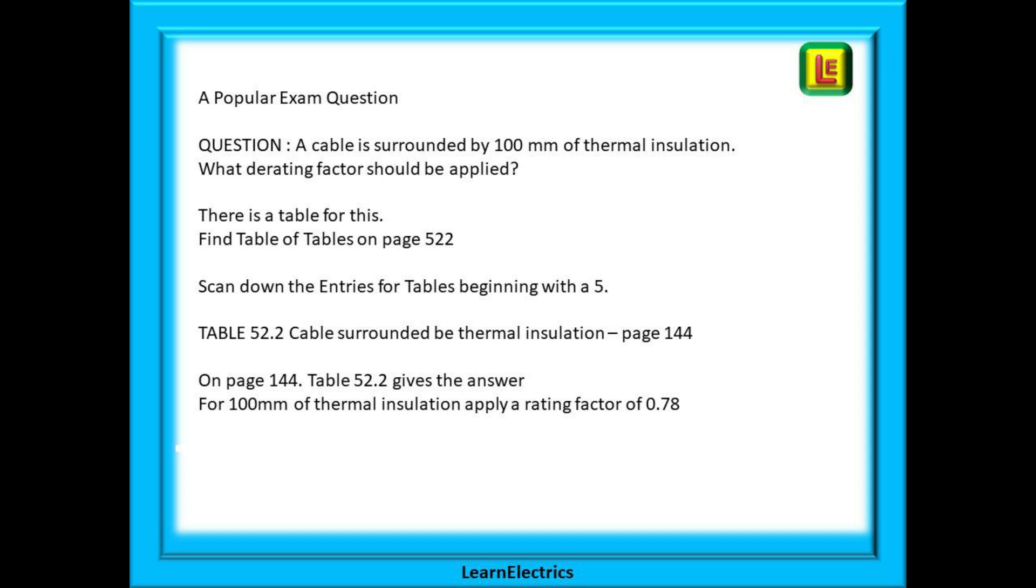Find table of tables on page 522. Scan down the entries for the tables that begin with a 5. Table 52.2 says cable surrounded by thermal insulation page 144. On page 144 table 52.2 gives the answer. For 100 millimeters of thermal insulation apply a derating factor of 0.78.